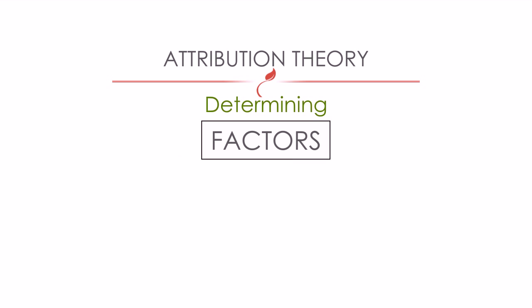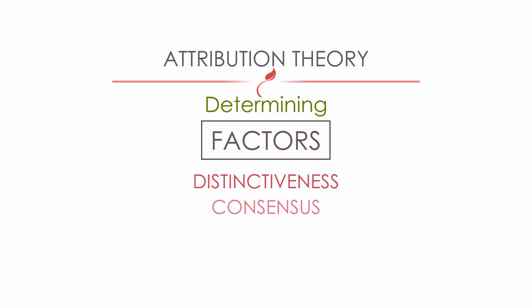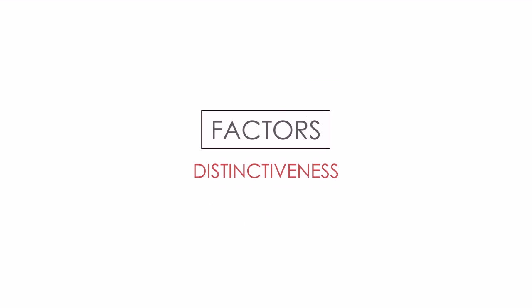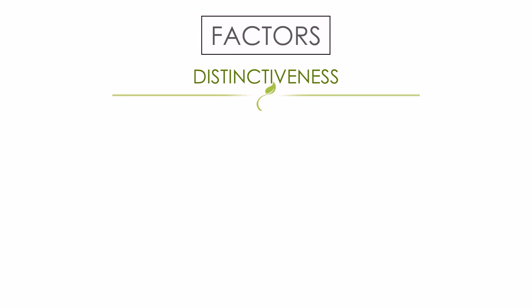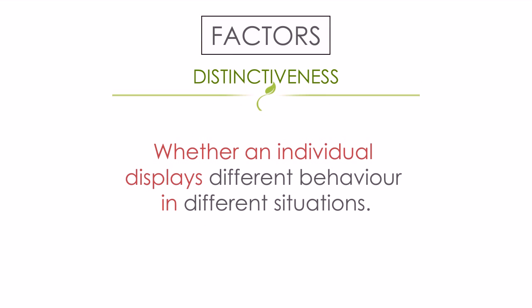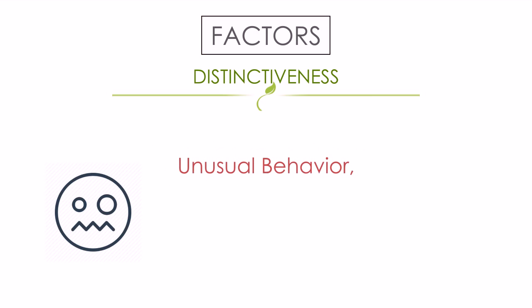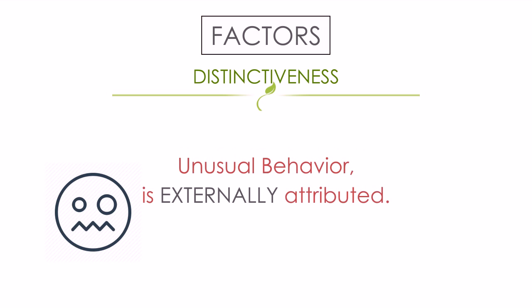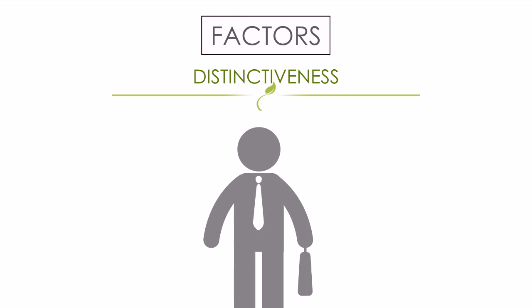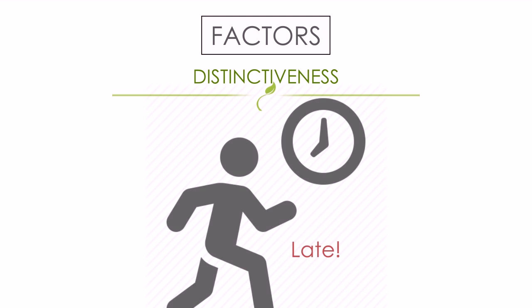Now about the three determining factors: distinctiveness, consensus, and consistency. Distinctiveness refers to whether an individual displays different behavior in different situations. If the behavior seems unusual, it is externally attributed. For example, it is unusual for a regular worker who is never late to work to be late someday.